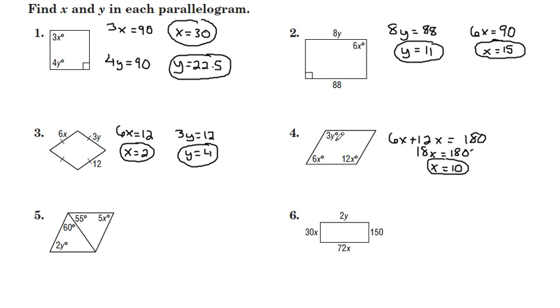Okay, now we can also use another property of the opposite angles being congruent. The 3y and the 12x, I'm going to set those equal to each other. And even though they're different variables, I now know what x is. x is 10, 12 times 10 is 120. 3y can be equal to 120. And if we divide both sides by 3, we get y is 40.